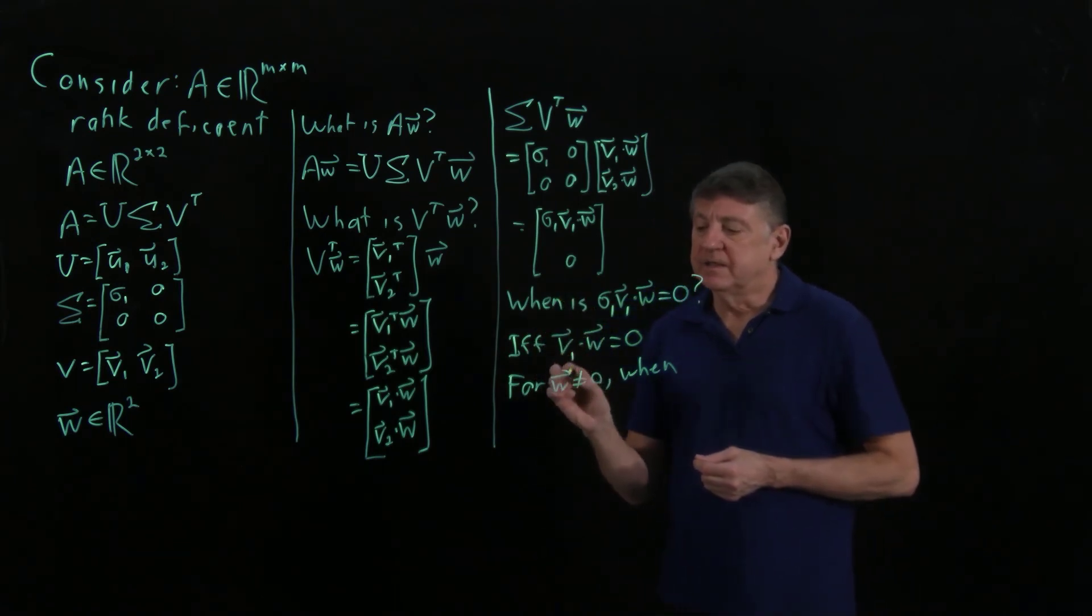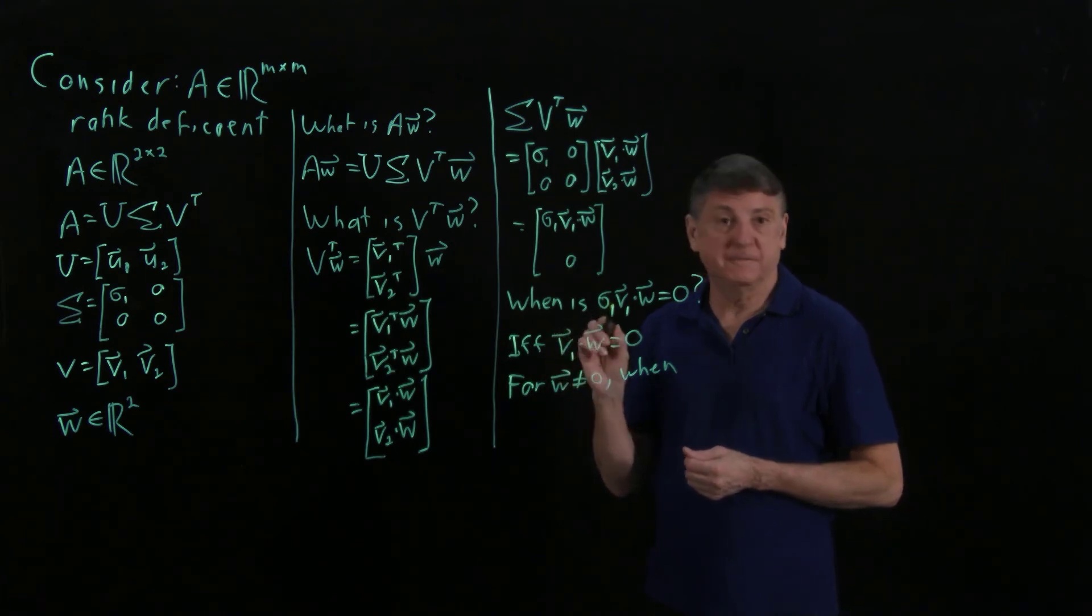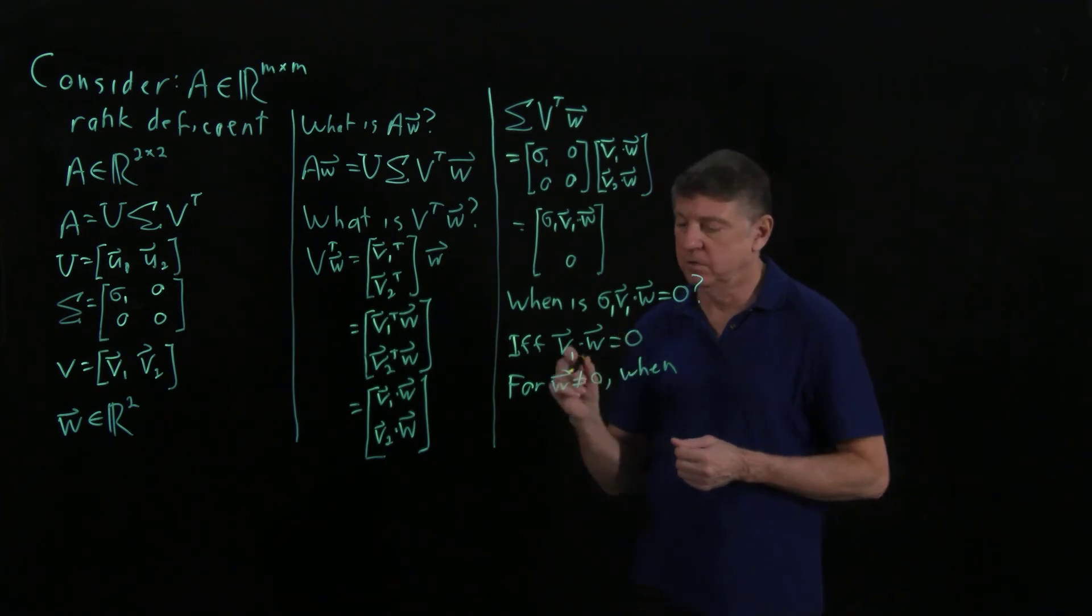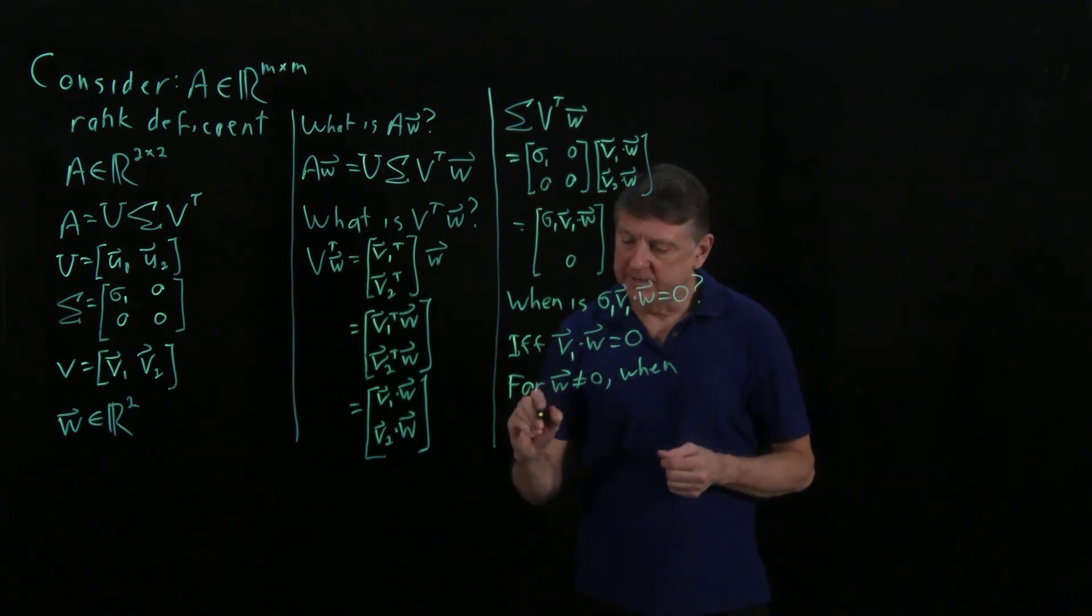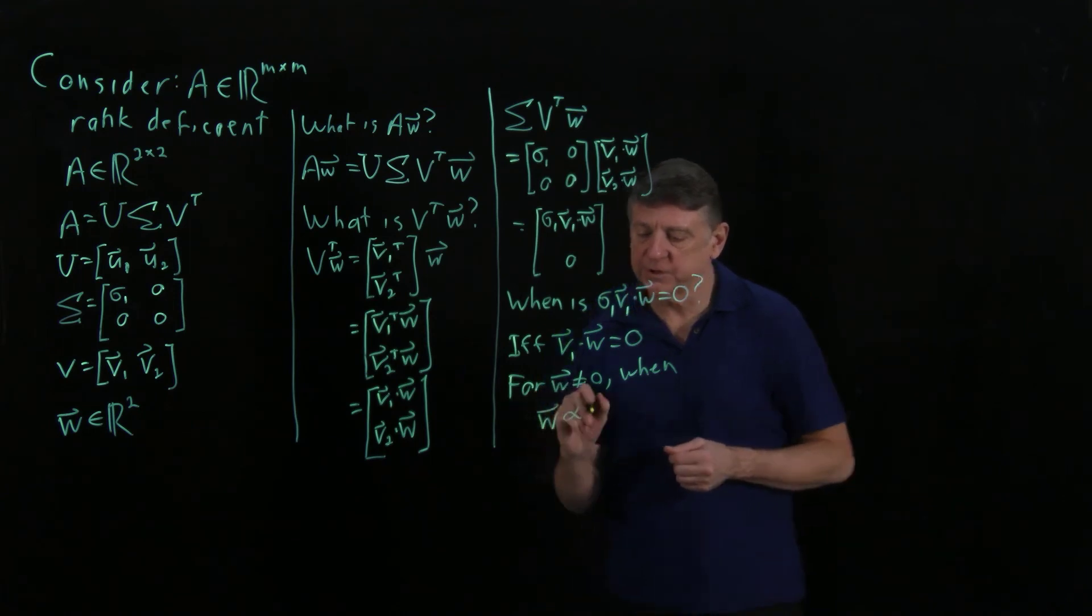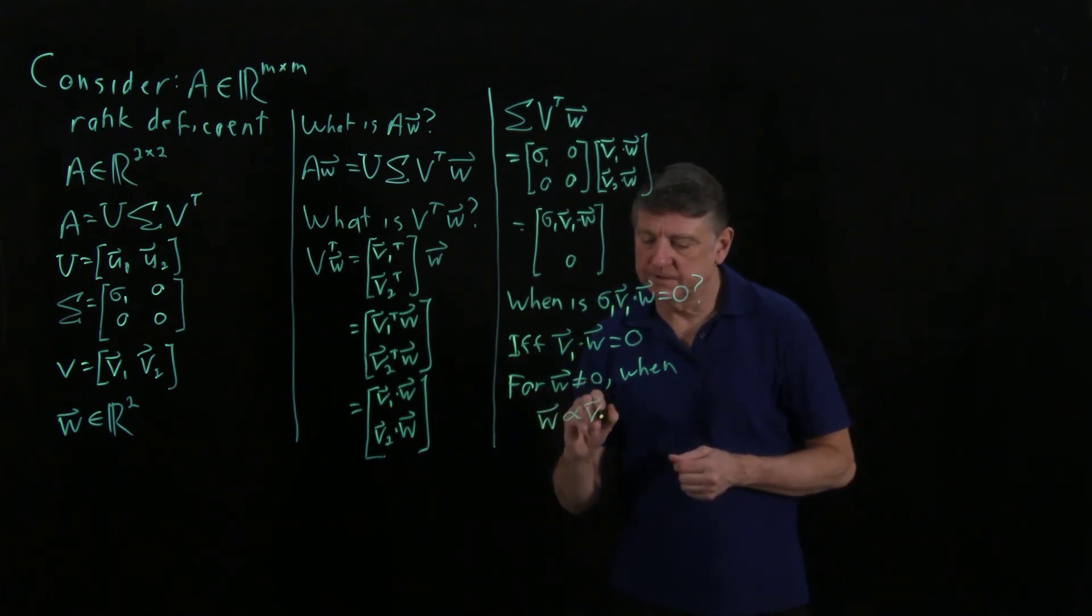So this is not, so for a non-zero, one way, in fact the only way, for V1 dot W to equal 0 is when W is proportional to V2.